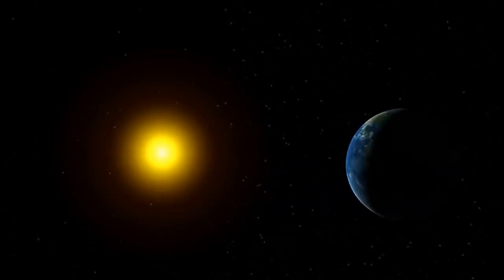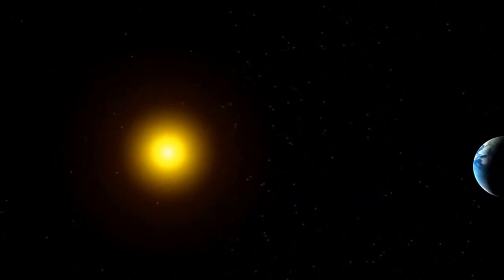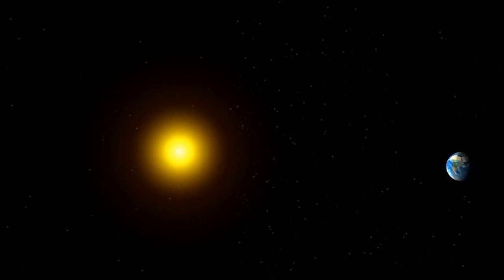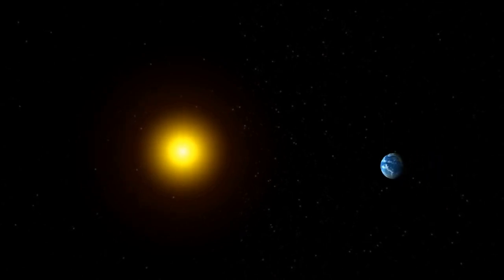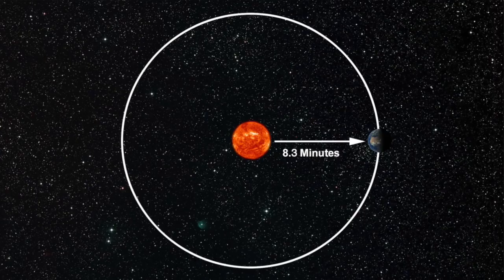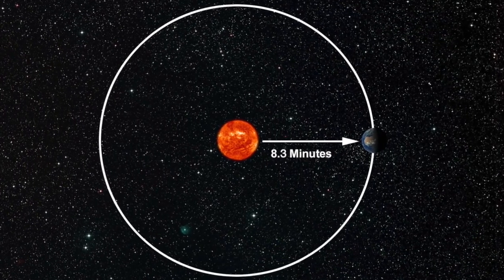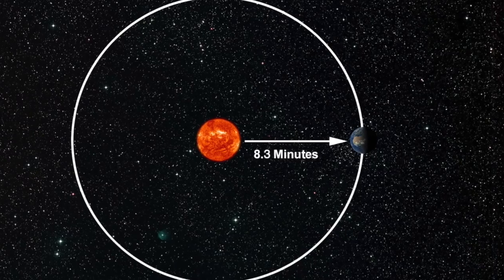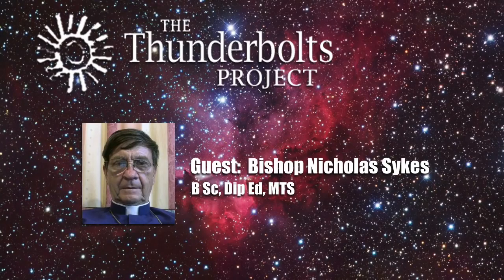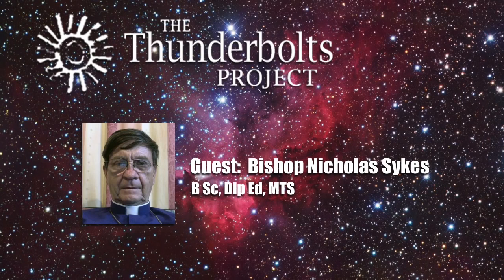However, such a deduction must inevitably bear with it the conclusion that the Earth is actually being attracted to some point in space that was the location of the Sun's centre of gravity 8.3 minutes of time in the past, rather than where that centre of gravity actually is when the Earth experiences the attraction. But that conclusion bears with it a number of fatal contradictions.